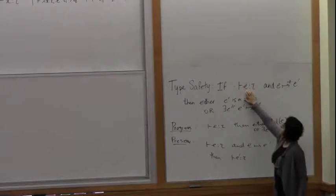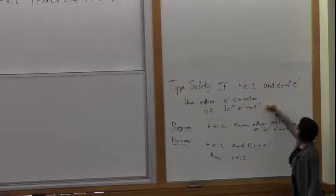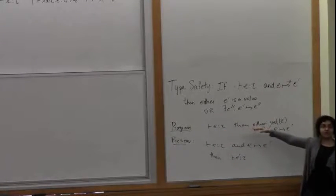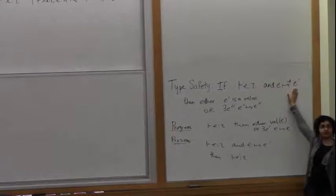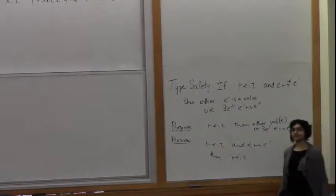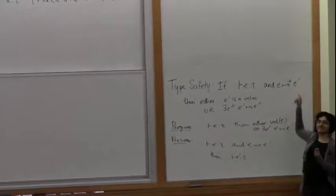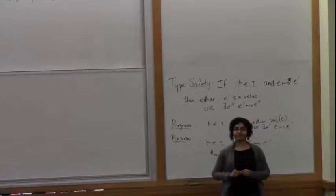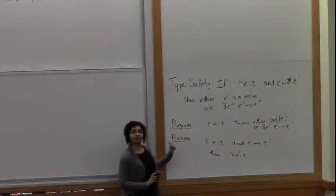We want to show that if some E is well-typed and E has stepped to E prime, then either E prime is a value or there exists an E double prime. We first use our preservation lemma a whole bunch of times — that tells us our E prime has type tau. Then we can use progress and we know that either E prime is a value or there exists another one. We're going to prove type safety directly using logical relations. We will not be using progress or preservation.